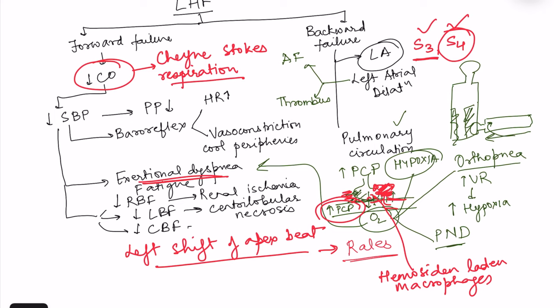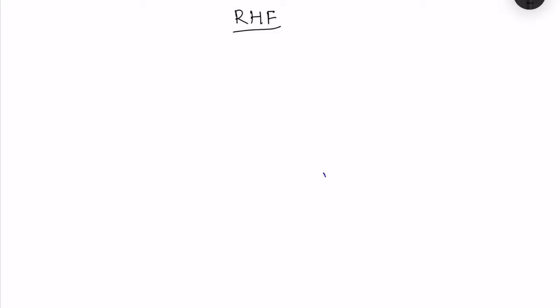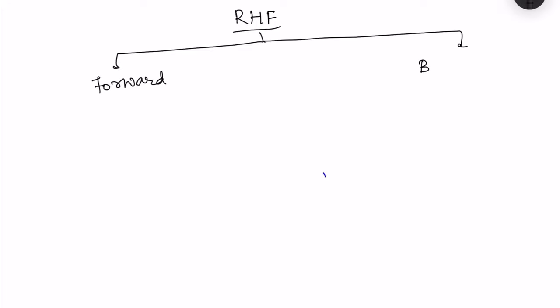Coming to right heart failure — there will again be forward and backward failure. One of the most common causes of right heart failure is left heart failure, because left heart failure increases pulmonary capillary pressure, causing pulmonary hypertension. The right ventricle then has to pump forcefully against this increased pulmonary pressure and slowly starts to fail as well.